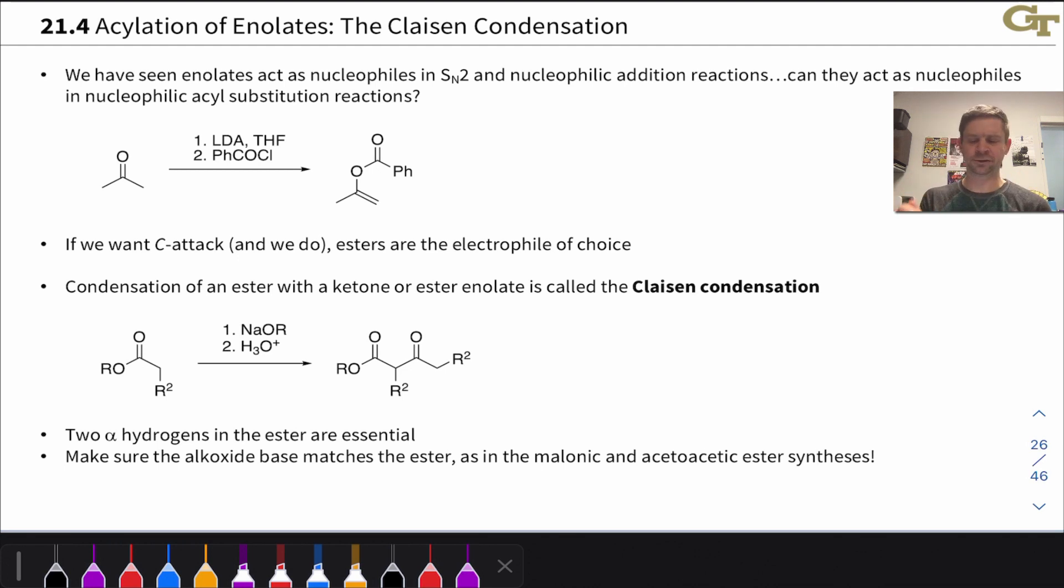If we try this with acetone, for example, we might imagine taking acetone, hitting it with LDA to get 100% of that acetone enolate, and then adding in an acyl chloride—here it's benzoyl chloride with a phenyl ring linked to the carbonyl carbon.